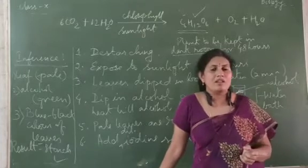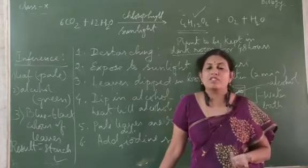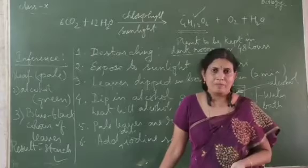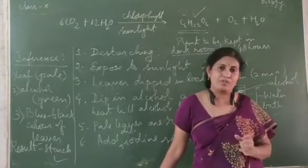Whereas the other bell jar which is having potassium hydroxide along with the plant is not showing such kind of results. The leaves will remain pale. So this experiment proves that carbon dioxide is very essential for photosynthesis.